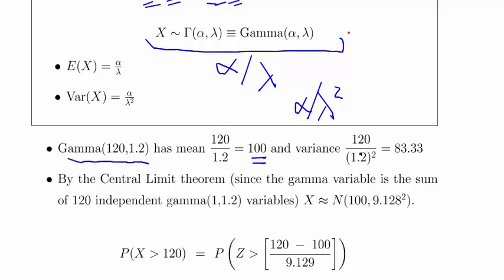By the central limit theorem, since the gamma variable is the sum of 120 independent gamma variables—that bit's very important there. I sort of touched on it a little bit at the start that it actually can be treated as the summation of multiple variables. That's what I was getting at there.